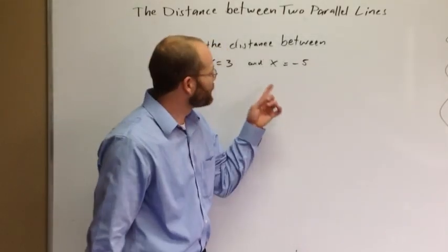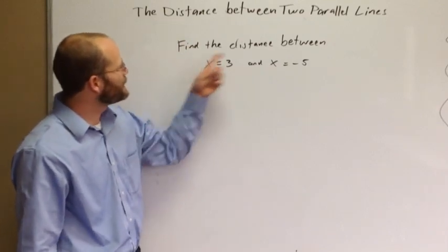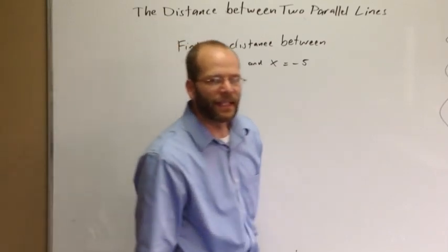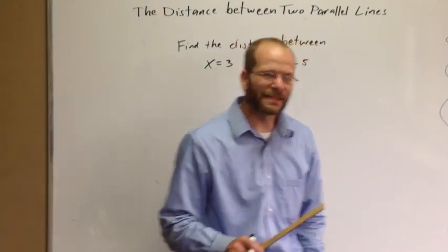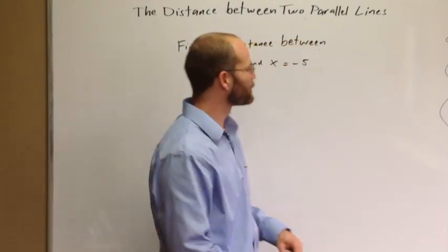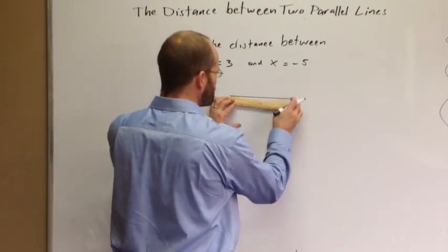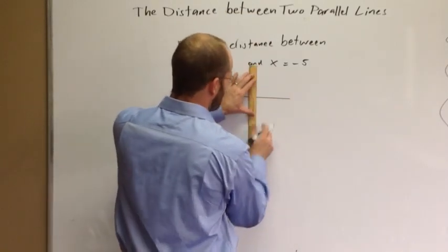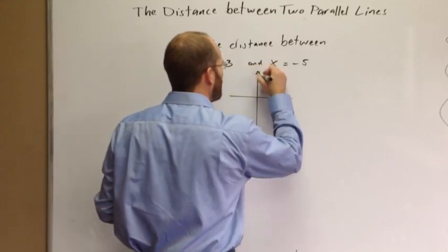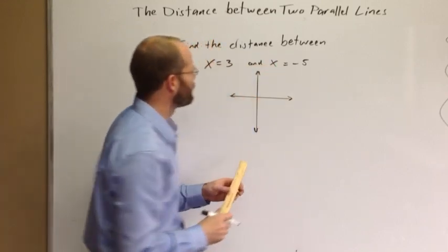Let's look at a quick example. This one's pretty straightforward — it says find the distance between x equals 3 and x equals negative 5. I'd like to use it to make sure we understand the concepts involved, even if we haven't addressed the math fully yet. So let's look at these two lines in the coordinate plane.